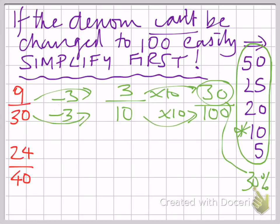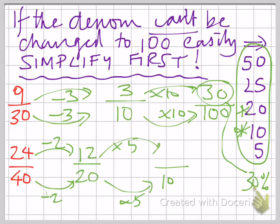Here again, I can simplify. This time, I'm just going to divide by 2 because I know they're both even. So if I divide by 2 here and I divide by 2 here, I'm going to get 12 over 20. I know I can change 20 into 100 by timesing by 5. So I'll get 100 on the bottom and I'll get 60 on the top. Here is my percentage, 60%.